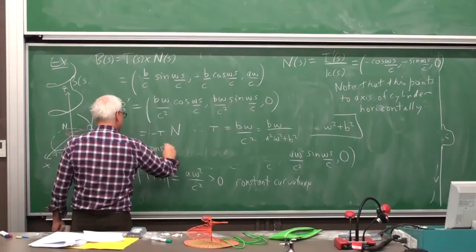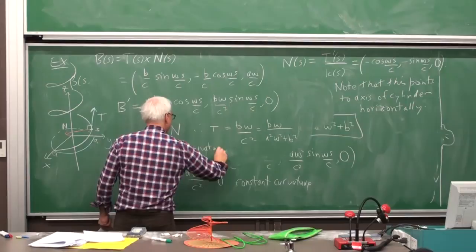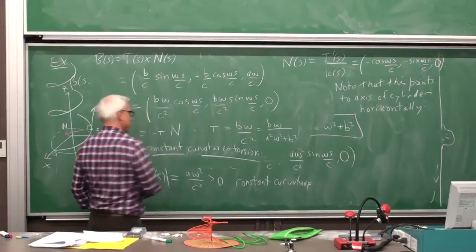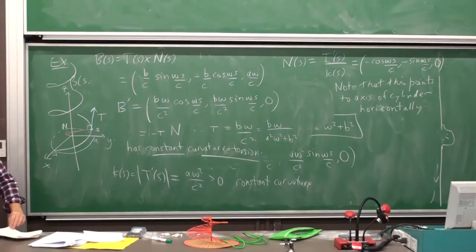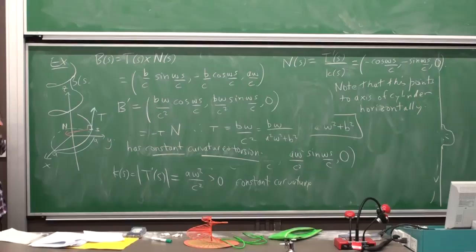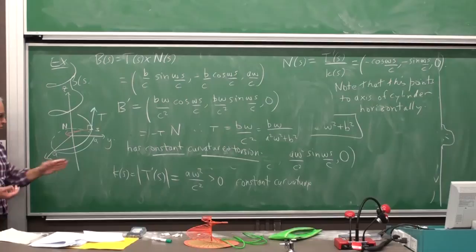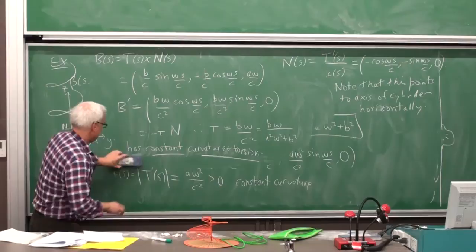So it has constant curvature and torsion. Now, as time goes by, the curvature has exactly the same value, and the torsion has exactly the same value. Okay, and the natural question is, well, if you have a constant curvature and torsion, do you necessarily have a helix? Do these two conditions define a helix?